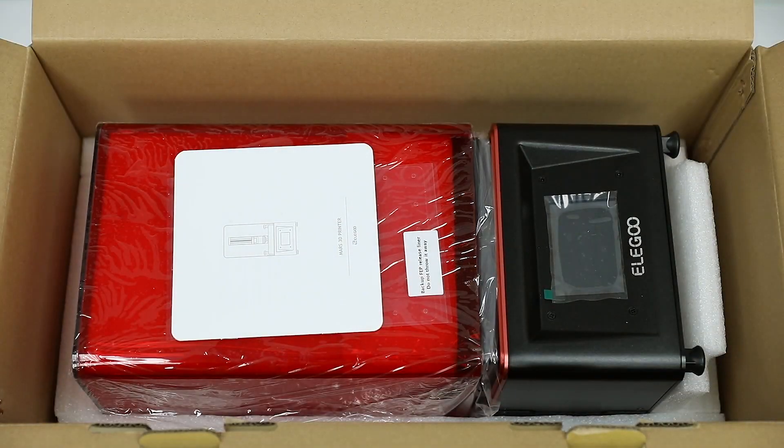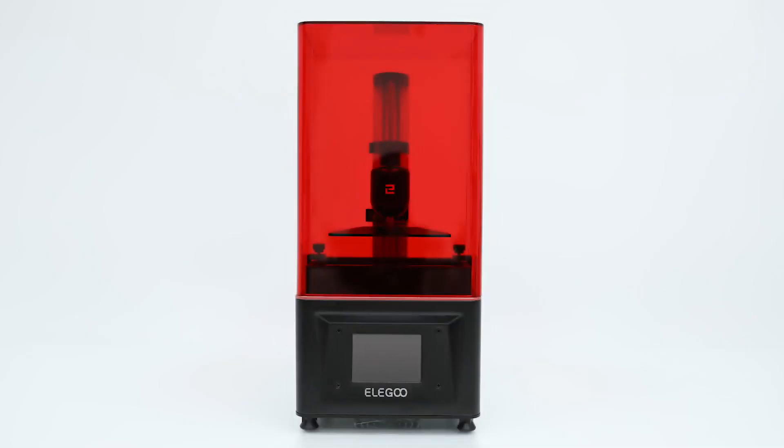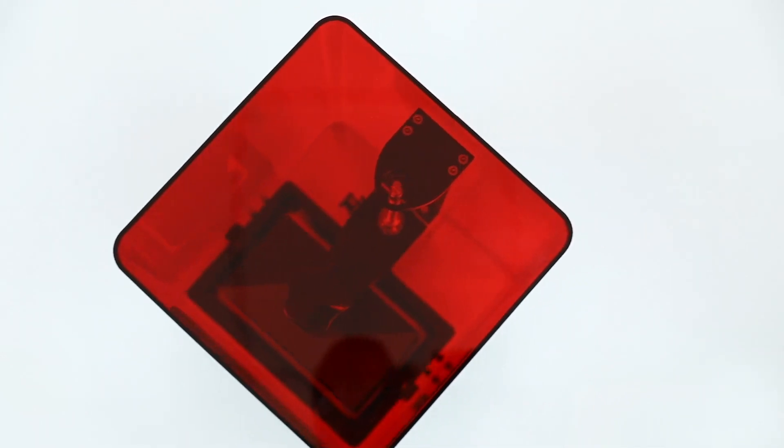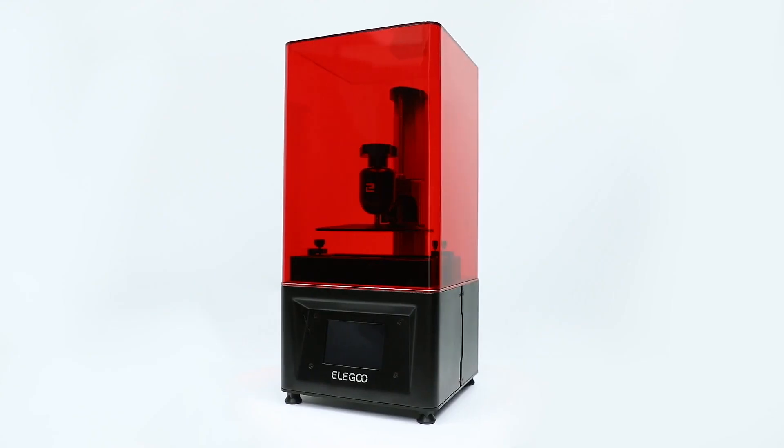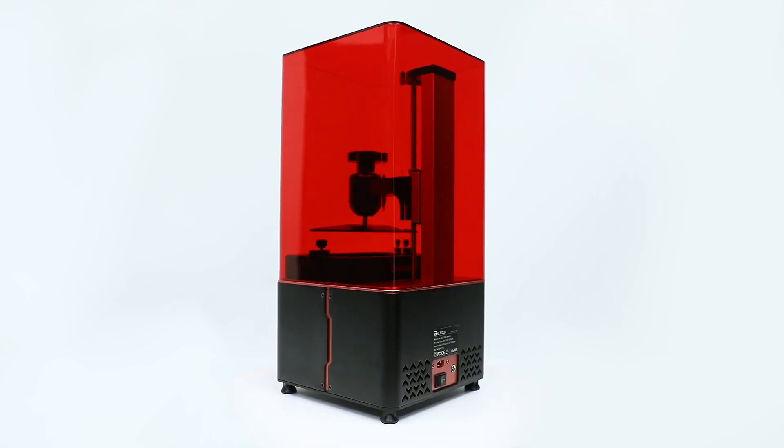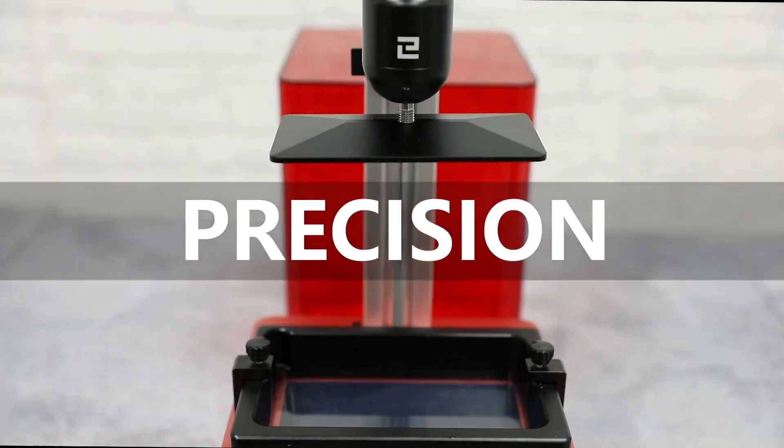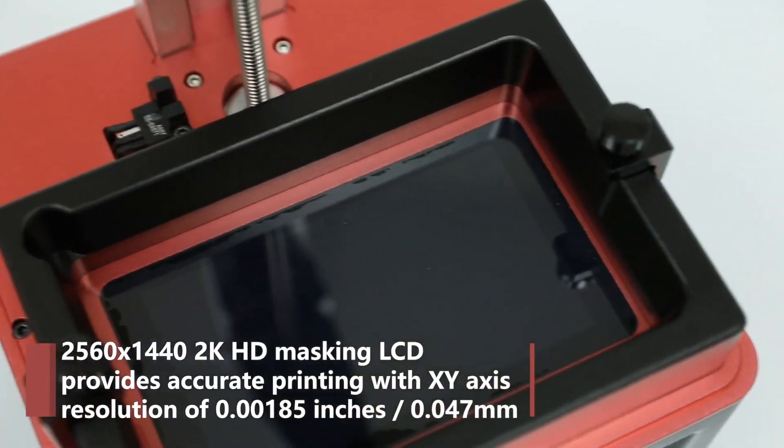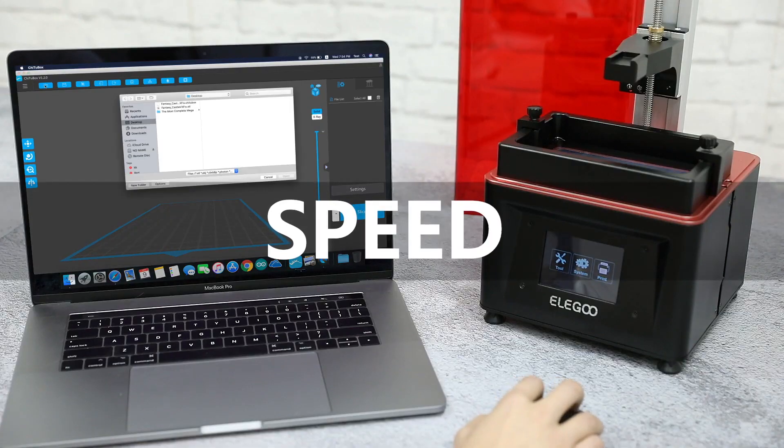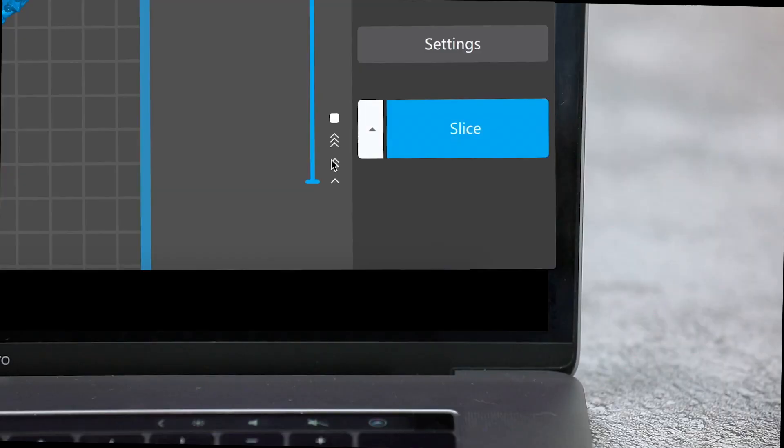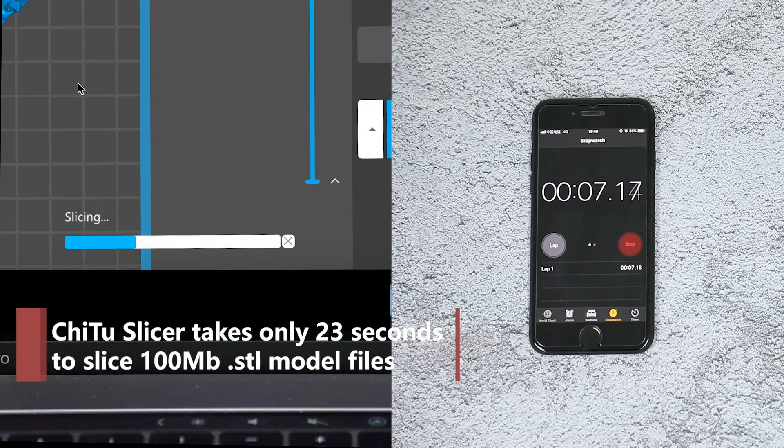For number 6, the original Elegoo Mars. This printer prints SLA material using conventional LCD technology. It has an LCD display of 5.5 inches with 2K resolution. The build volume is 120x68x155mm and it has a selling price of $190.